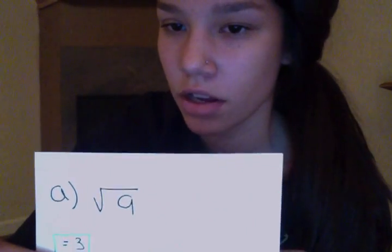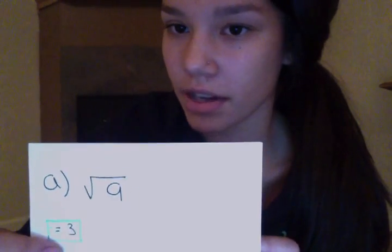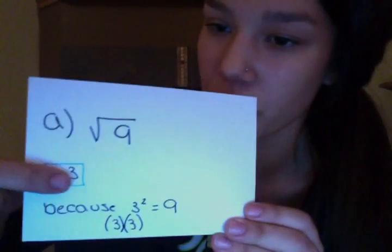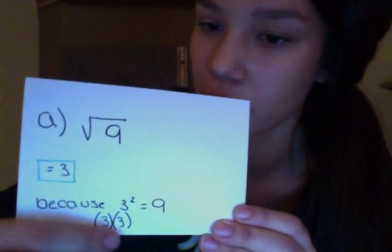In this problem we're asked to evaluate six radical expressions. The first expression is the square root of 9. That is asking what squared, or what times itself, would equal 9. The answer would be 3 because 3 times 3 equals 9.